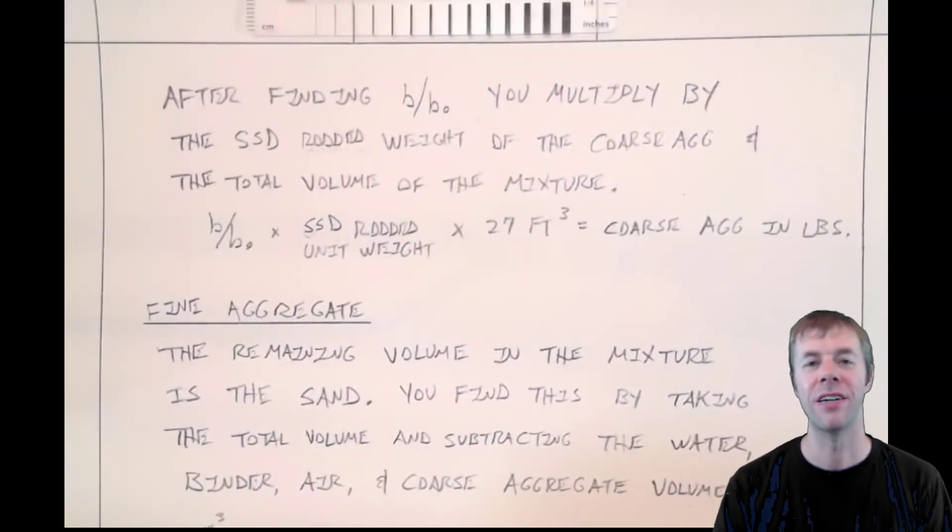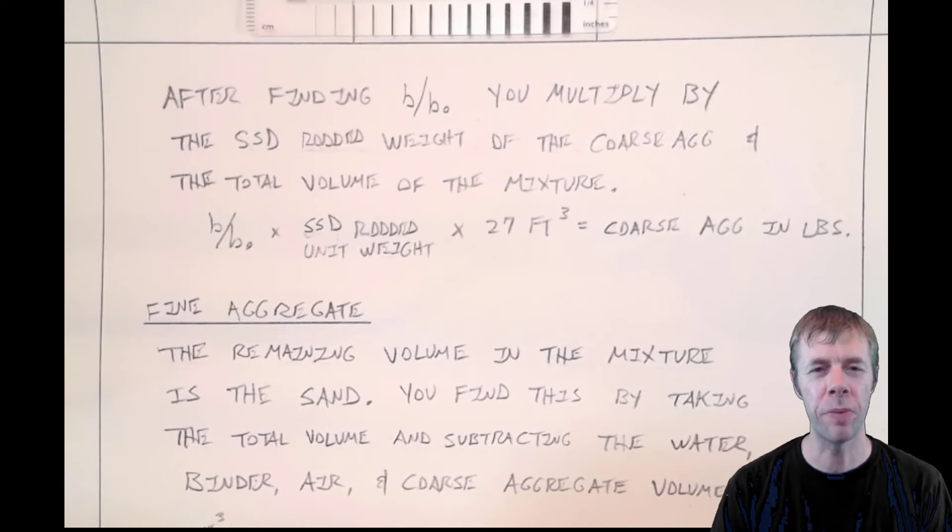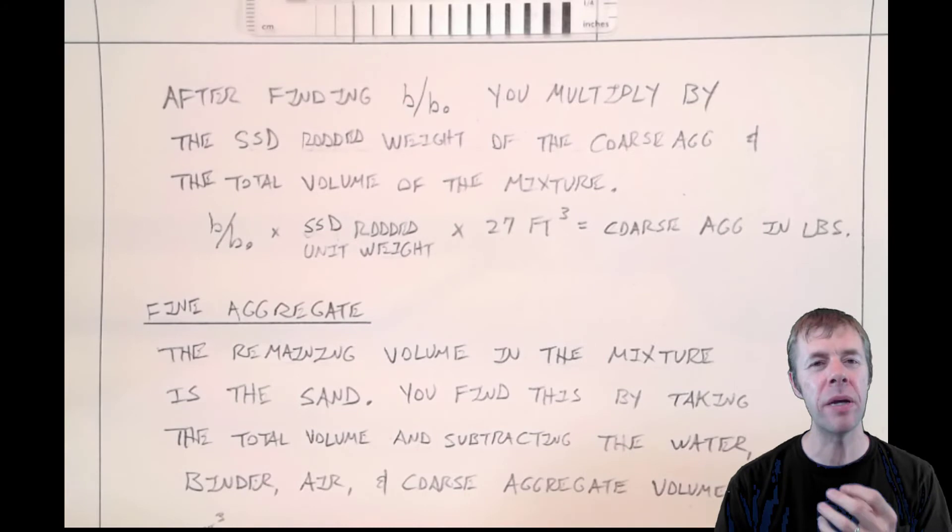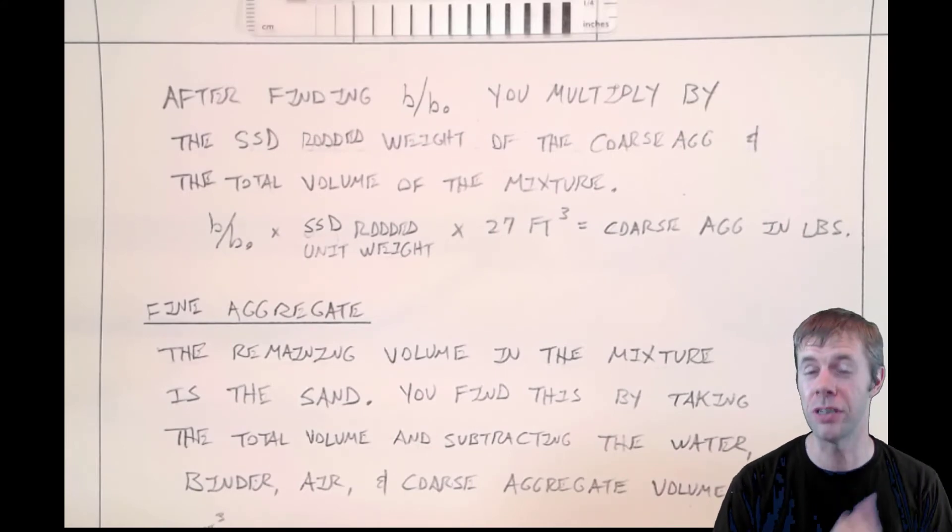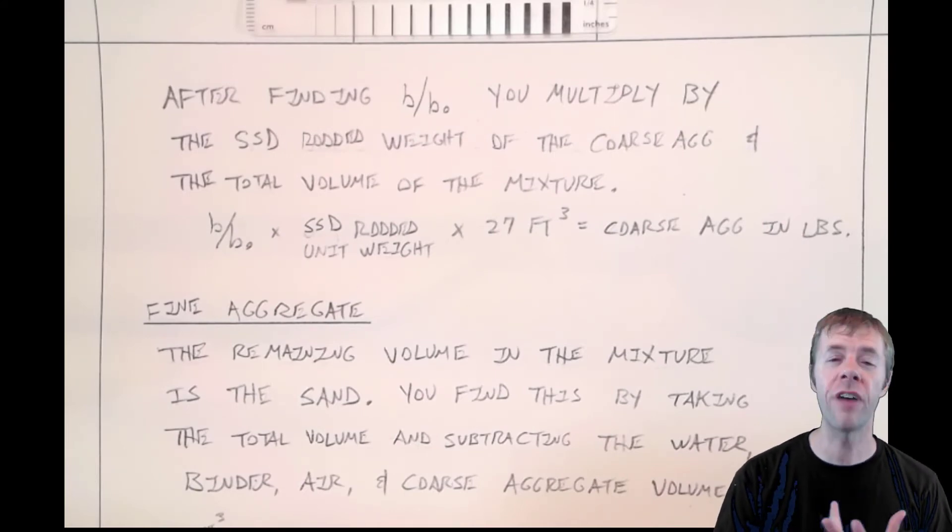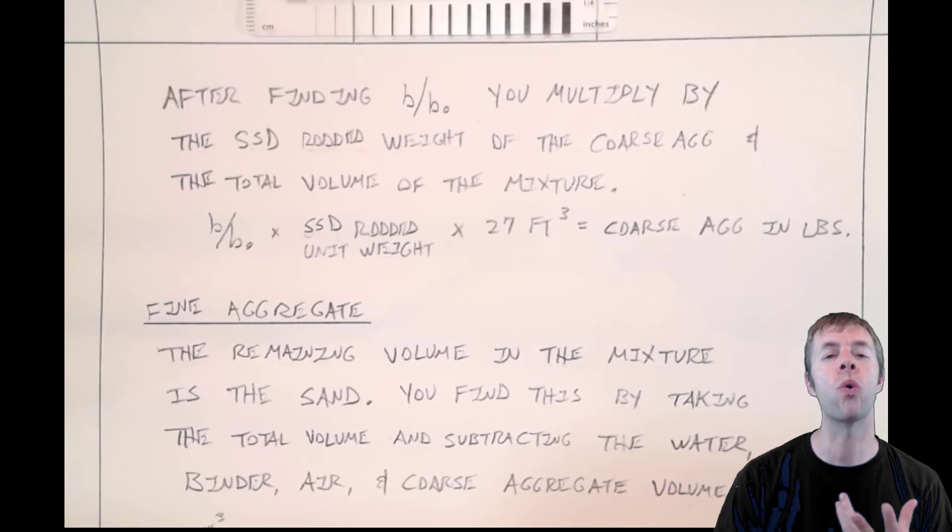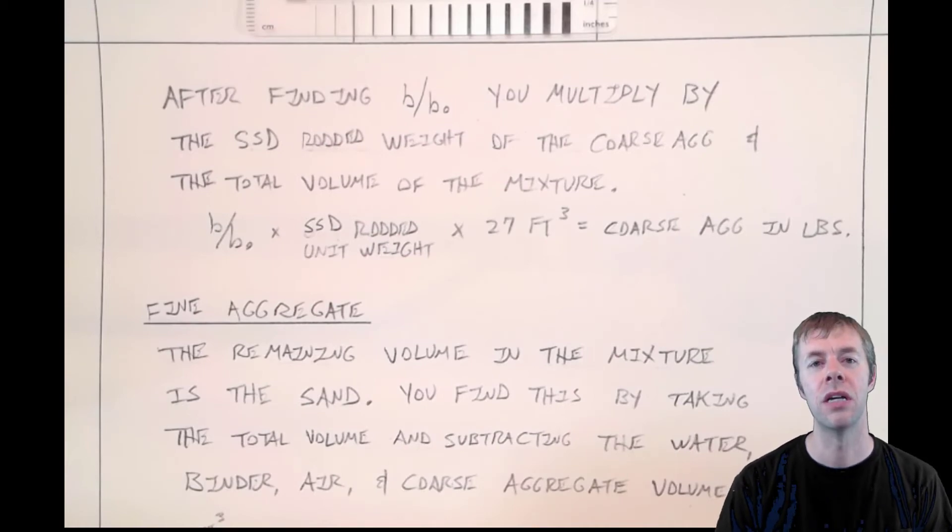So after finding this mythical B over B naught, after finding this mythical spacing based on what they think your maximum nominal aggregate size is—that's kind of an insight to what your gradation is—and based on your fineness modulus, that's how coarse or fine your sand is and how they think all that's going to pack together.